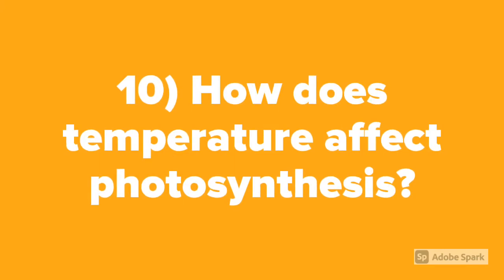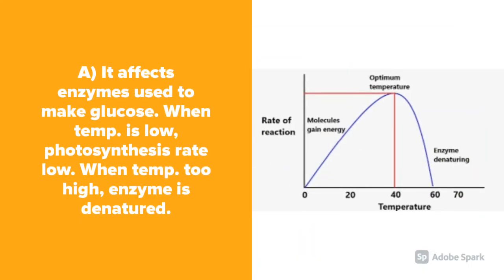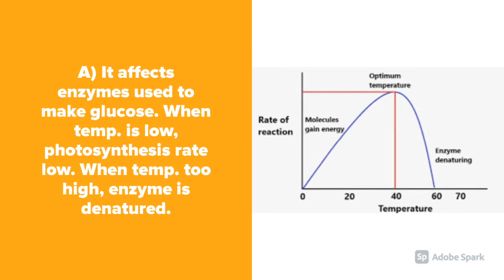Question number 10: How does temperature affect photosynthesis? It affects enzymes that are used to make glucose in photosynthesis. When the temperature is low, the photosynthesis rate is low. When the temperature gets too high, the enzyme gets denatured.